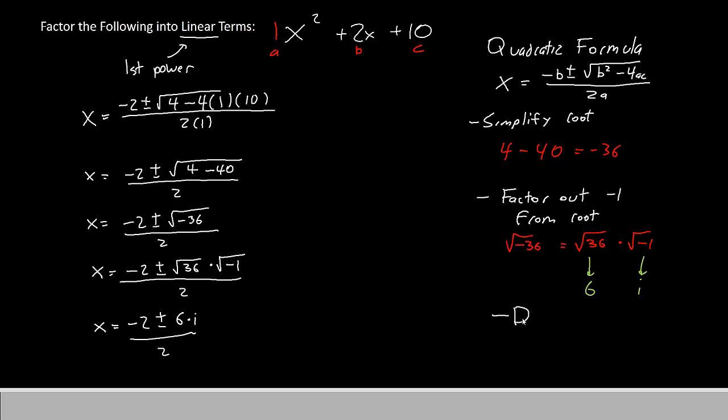Our final step is to divide both terms by 2. Negative 2 over 2 gives us negative 1, plus or minus 6i divided by 2 gives us 3i. So we can say that our answer is X equals negative 1 plus or minus 3i.